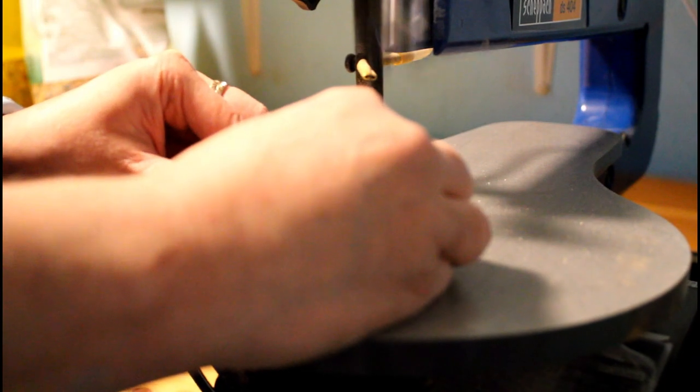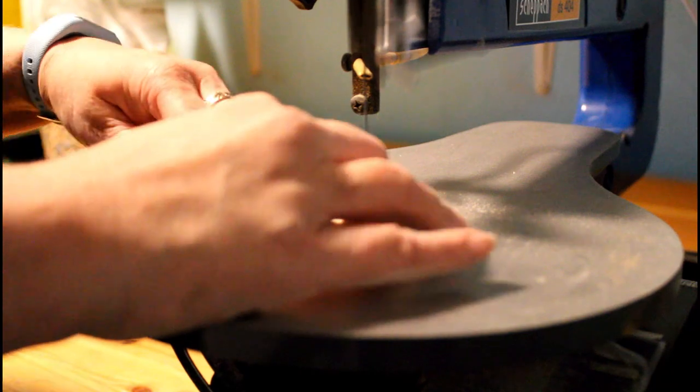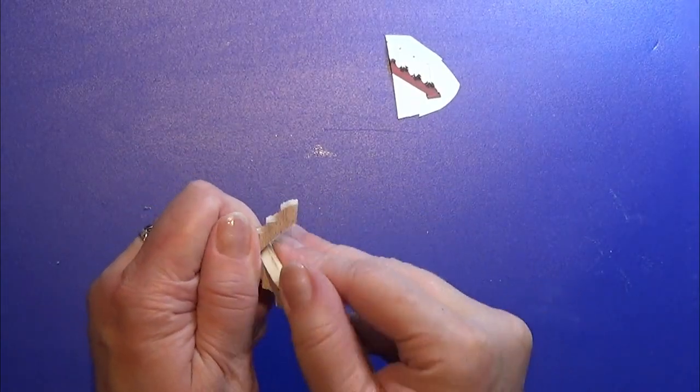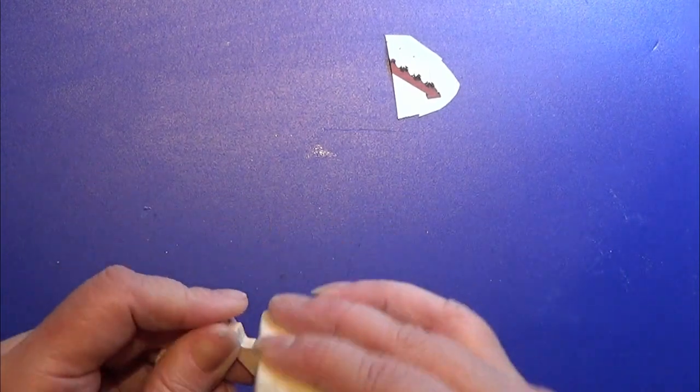I used my scroll saw to cut out this little bow. I thought I had recorded how I drew it on to this little piece of wood, but sadly I didn't. I am going to leave a link in the info box below for this print file.